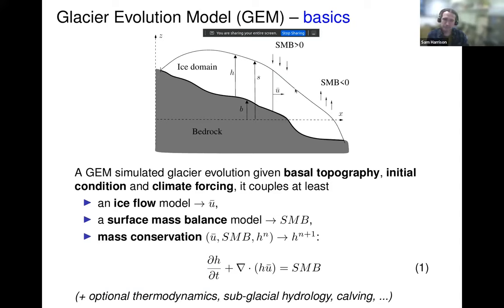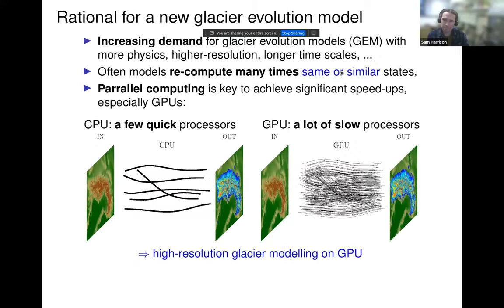A glacier evolution model has two main components. On one hand, there is exchange with the climate that translates into surface mass balance — positive on top of a glacier, negative on the bottom. On the other hand, there is ice flow, which drains ice from the top to the bottom. The model tracks ice thickness evolution accounting for ice flow and surface mass balance through mass conservation equations. We can add thermal dynamics, glacier hydrology, and other components as needed.